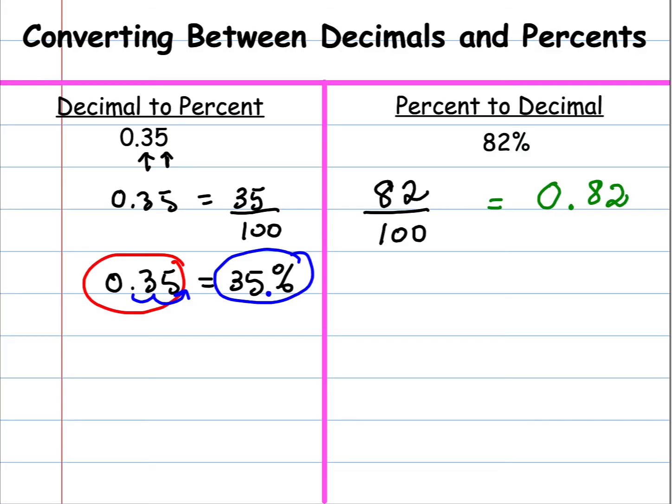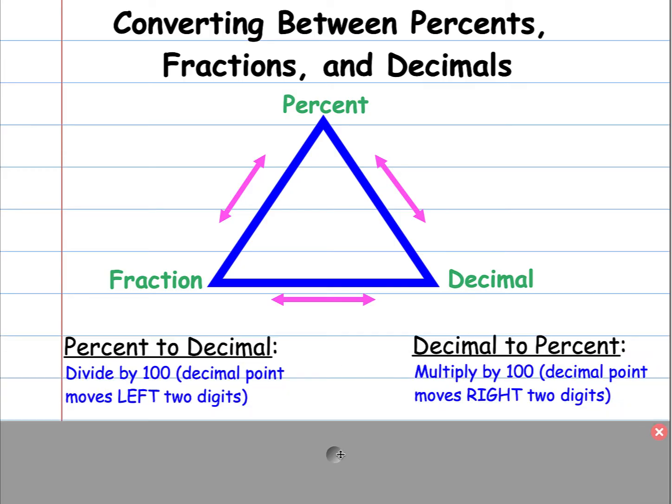So again, let's look at what happened. So we had 82% and we said it's equal to the decimal value, 82 hundredths. And so remember, the decimal point is here in the percent, one, two, to get it to be before the eight. So I had to move the decimal point two digits to the left. So if I wanted to convert between a percent to a decimal, I divide by 100. And what happens is the decimal point moves left two digits. If I want to go from a decimal to a percent, I multiply by 100, or move the decimal point right two digits.